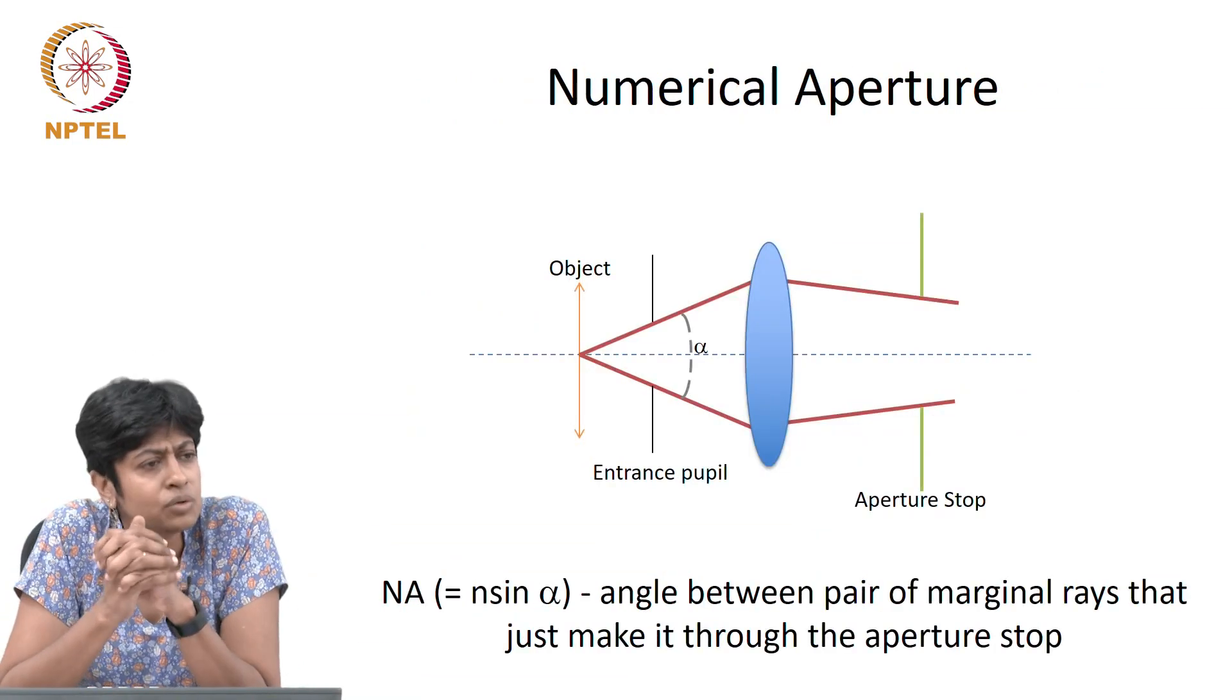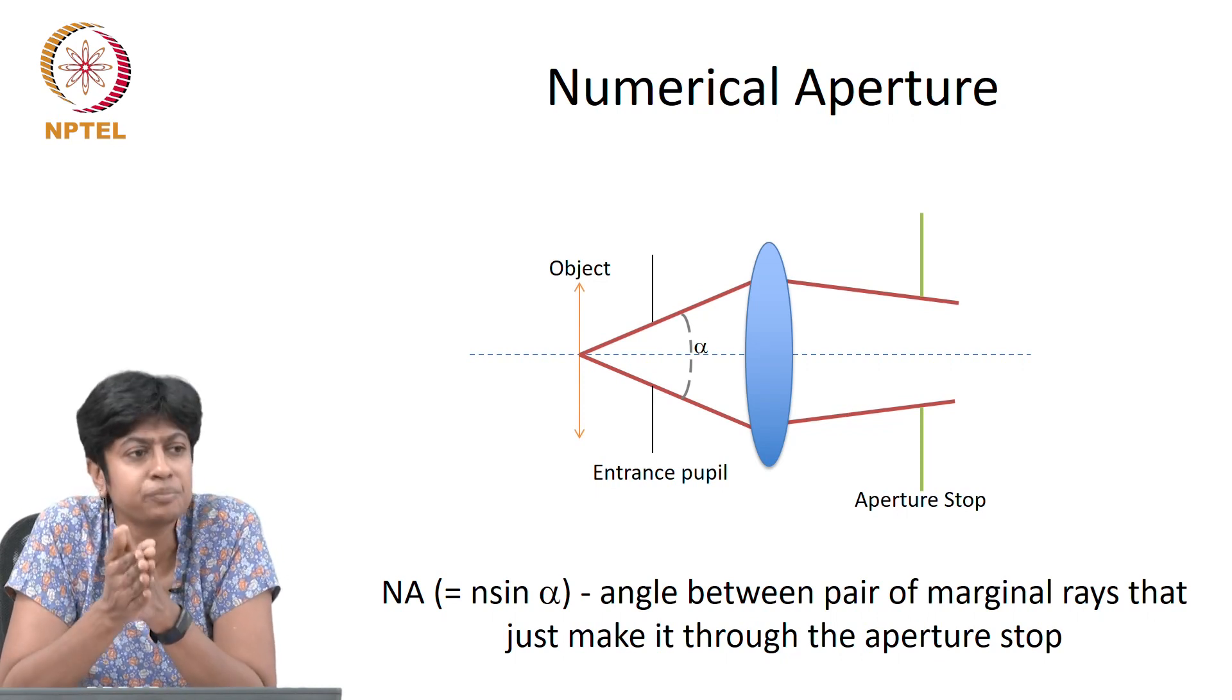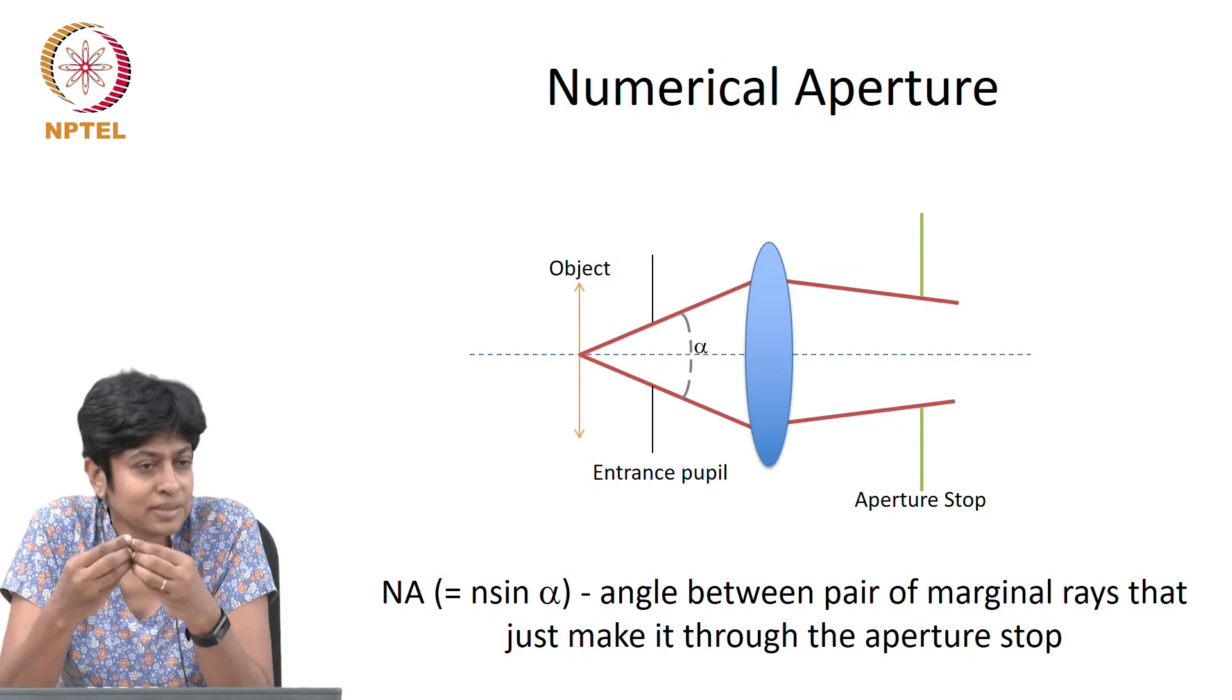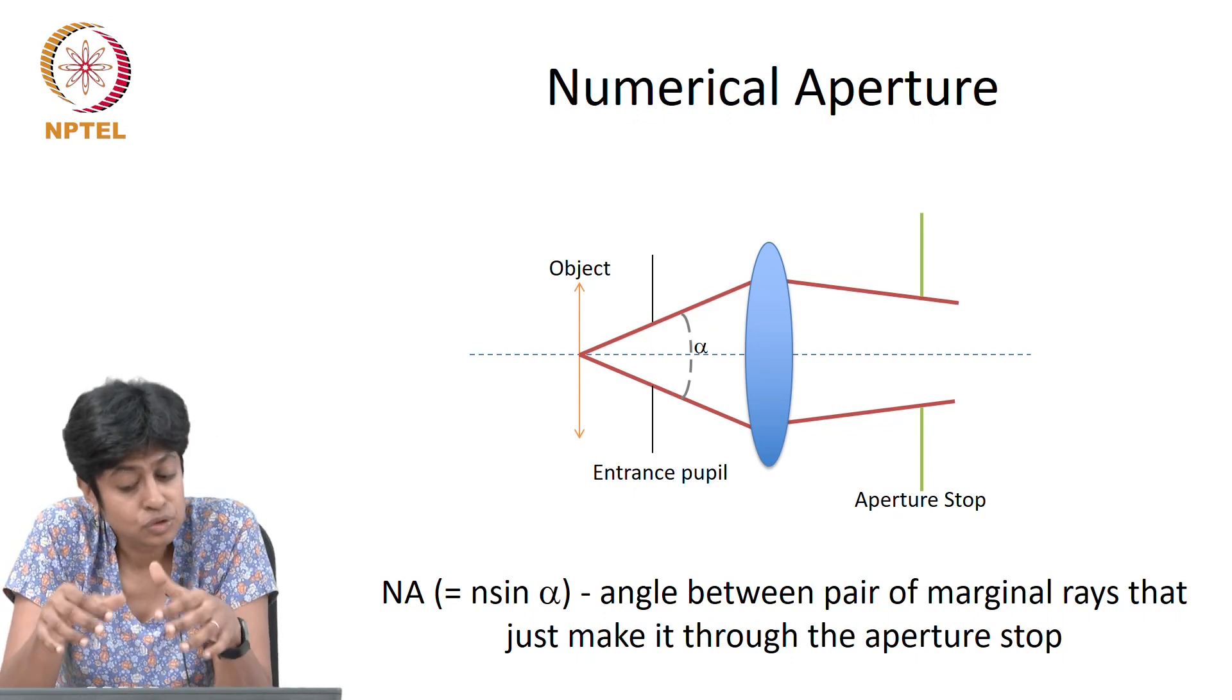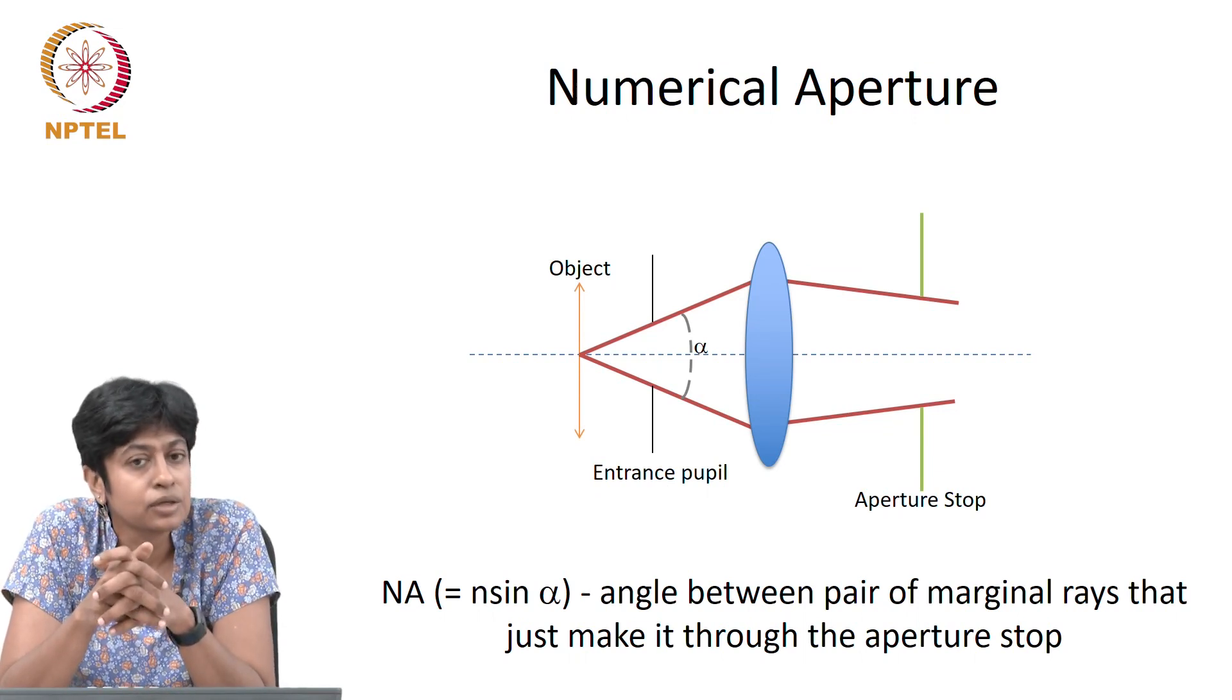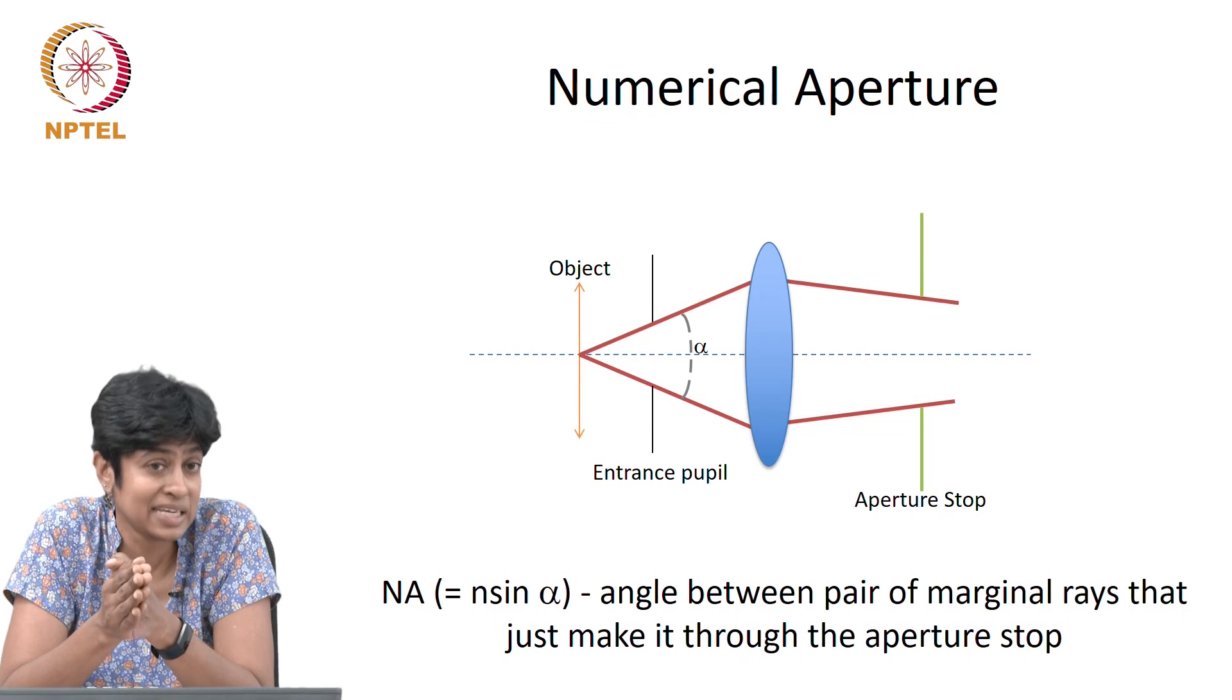So, let us now look at a definition of a term called the numerical aperture. We talked about the aperture stop and I have been talking about the cone of light. So if I want to formalize that cone of light definition, we do it through this term called the numerical aperture. And if you work with any system in optics, you will often be given the numerical aperture of the system, even what is the numerical aperture of this lens.